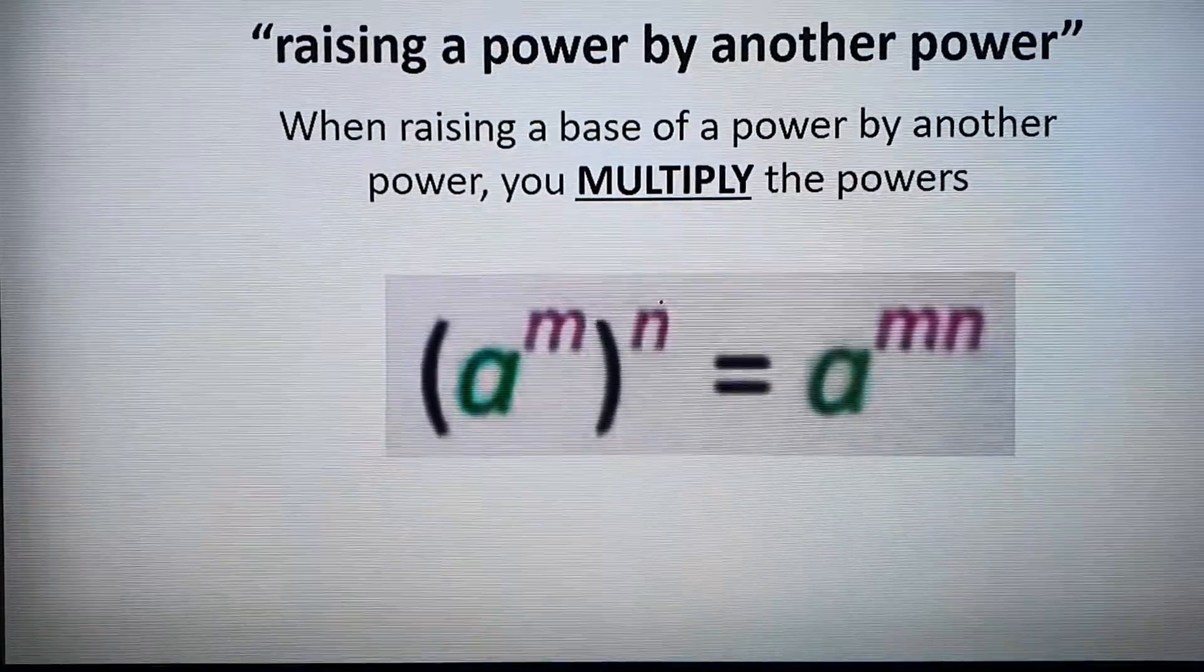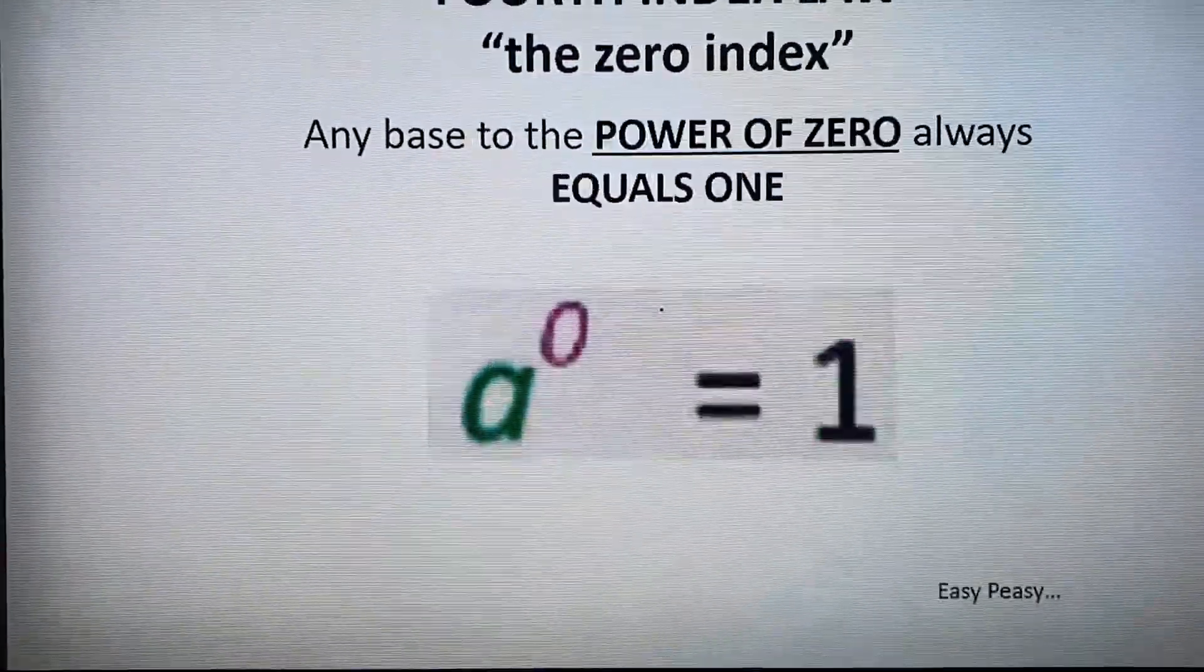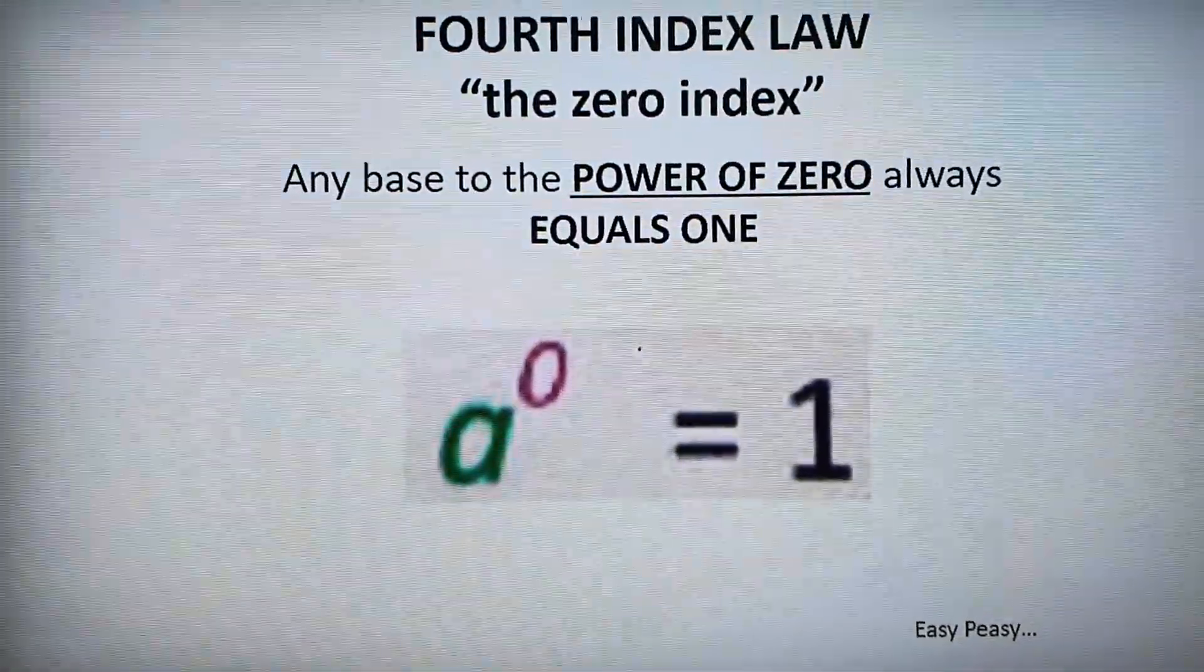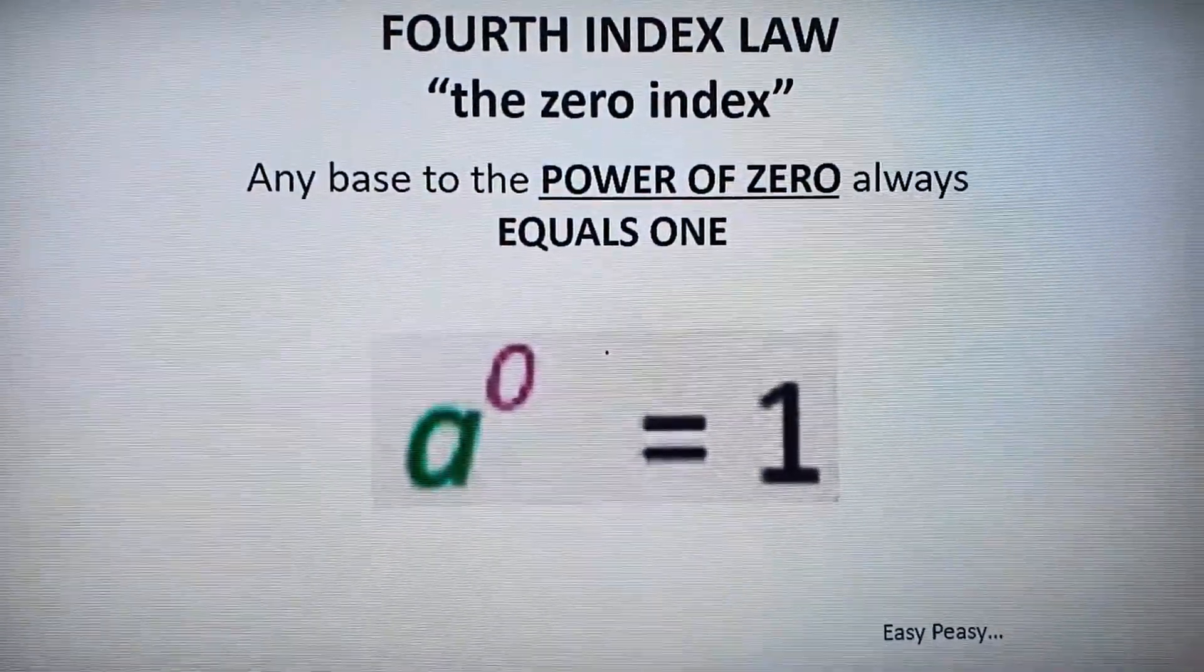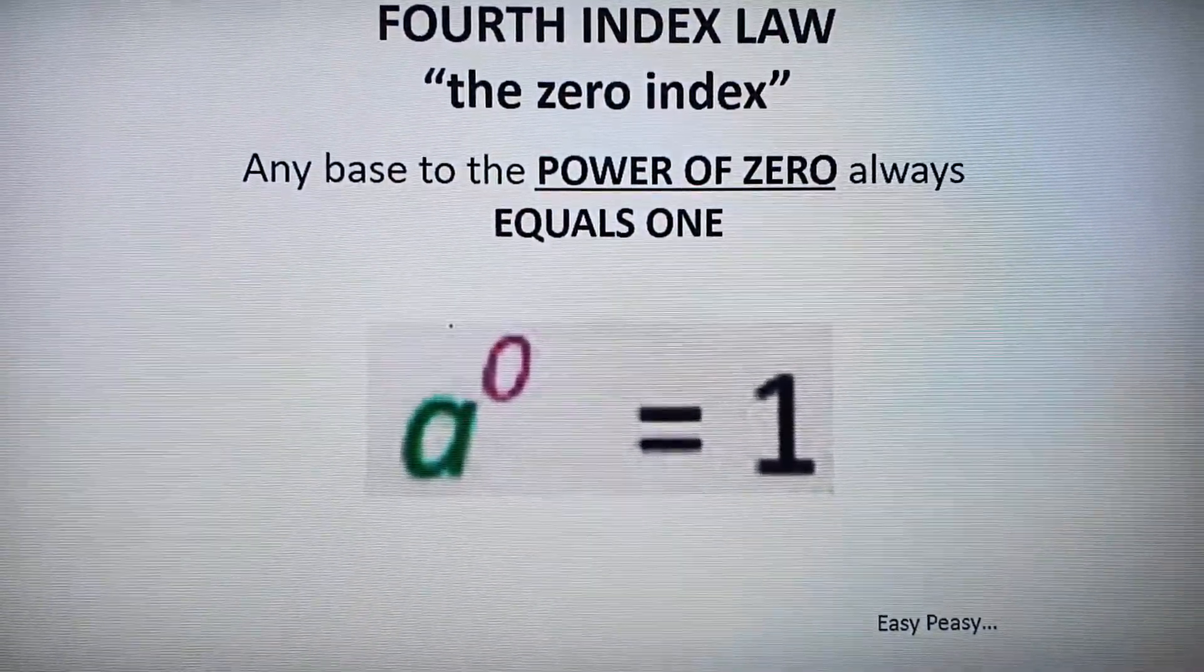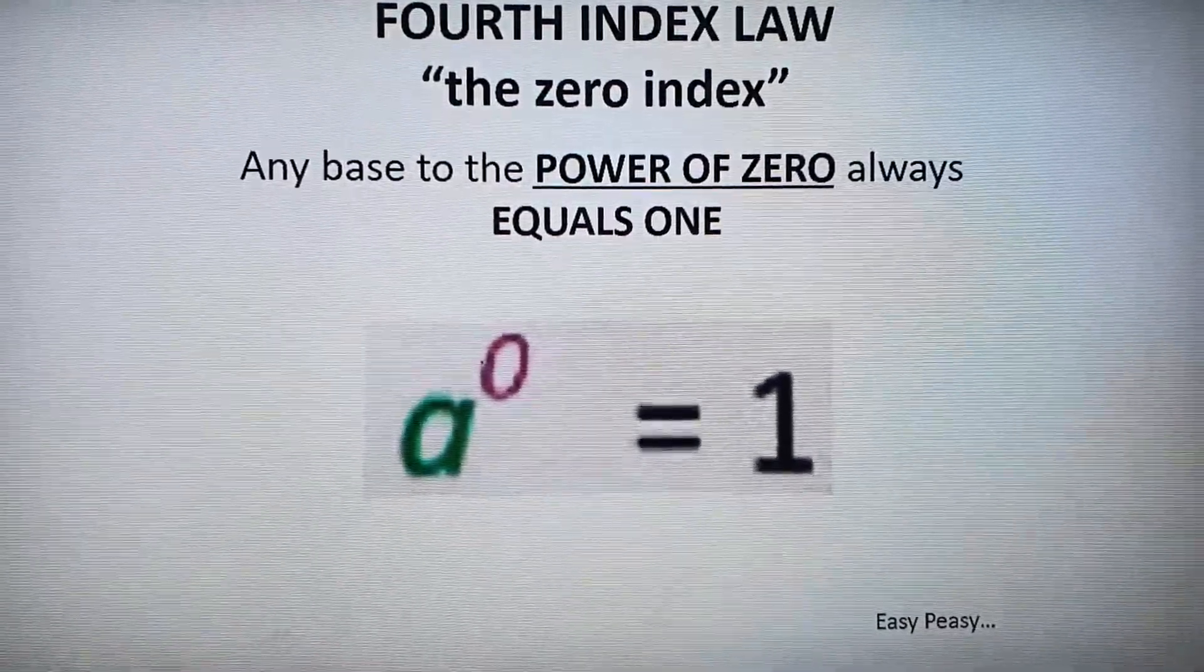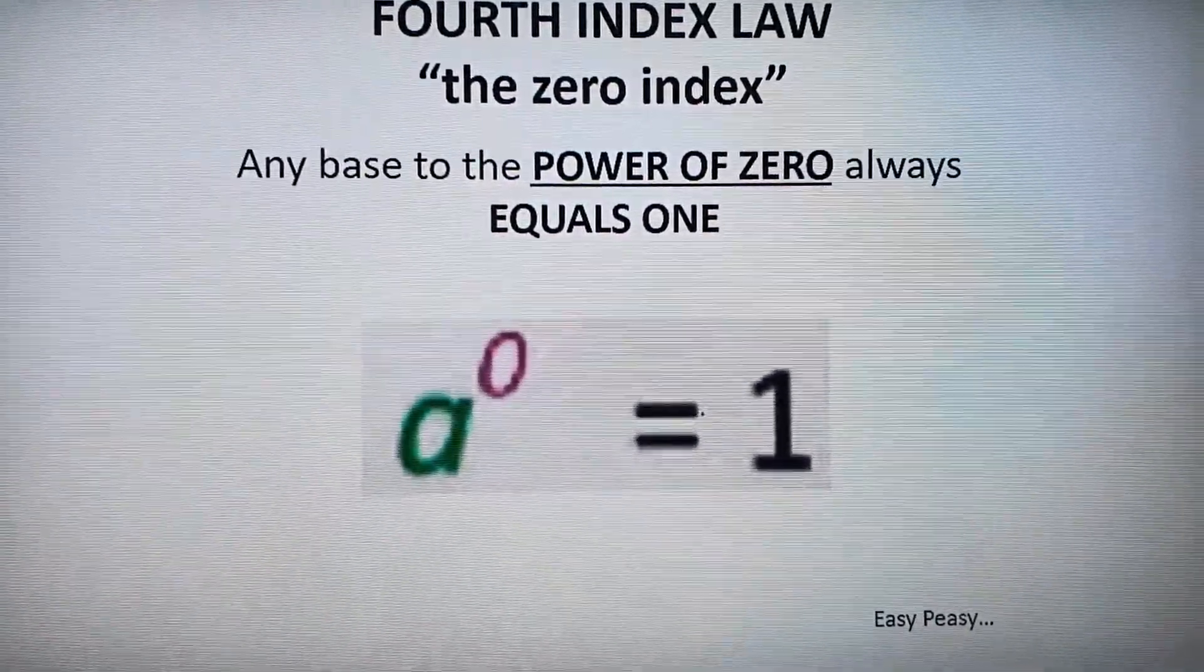So that's all it is. The fourth index law, this one over here, refers to the zero index. And it is pretty simple, but some people tend to get it confused. So anything that's raised to the power of zero always equals to one.